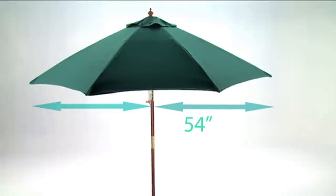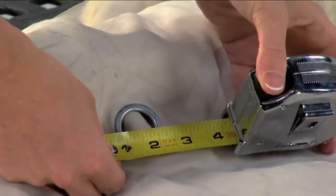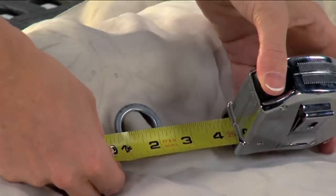For example, an umbrella with a 54-inch radius is considered to be a 9-foot umbrella. You will also need to include the measurement for your grommet's inside diameter when ordering your replacement canopy.